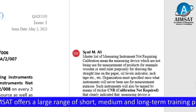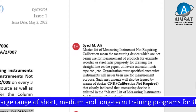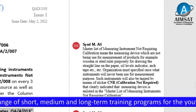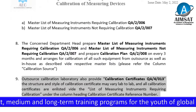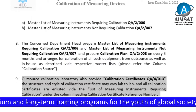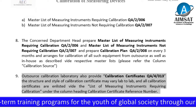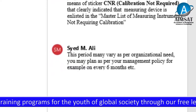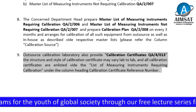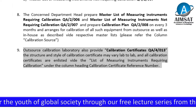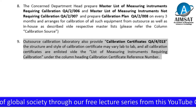An oil level indicator is another example. The organization must specify which instruments will never be used for measurement; such instruments will be tagged with a CNR (Calibration Not Required) sticker, clearly indicating they are enlisted in the master list of measuring instruments not requiring calibration. A calibration plan is prepared every three months for calibration of all equipment from outsource as well as in-house. The period may vary as per organizational need — for example, every six months. Outsource calibration laboratories also provide calibration certificates; the structure and style of certificates may vary from lab to lab.